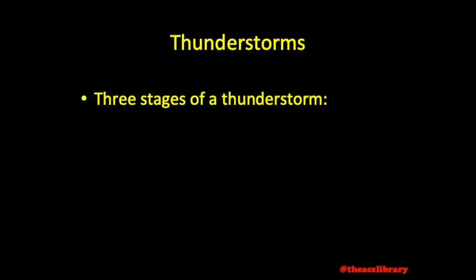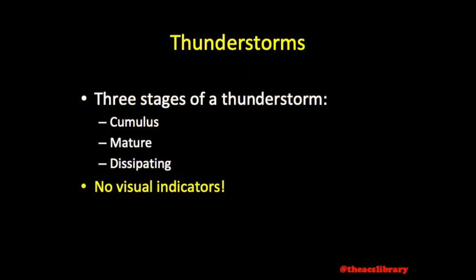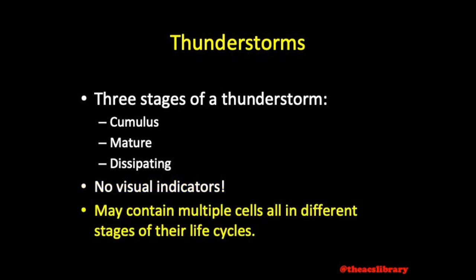Thunderstorms have three stages of their life cycle: the cumulus, mature, and dissipating stages. These stages have no obvious visual indicators, and a thunderstorm may be a cluster of multiple cells all in different stages of their life cycle.